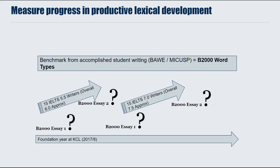Basically what I did was look at a number of essays from the Bohr corpus and a number of essays from the MyCusp corpus. I standardised them all to a thousand words and I used word lists — the New General Service List from Brown and Culligan et al. — in order to identify, when you look at the writing in those thousand words, how many of those word types are not common. 'Not common' is defined as beyond the most frequent 2000 word families in the New General Service List.